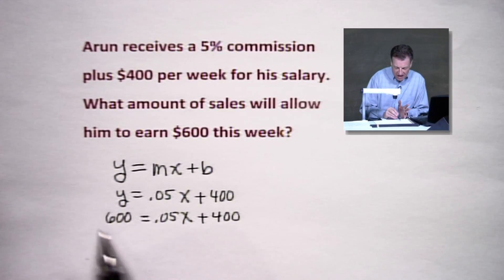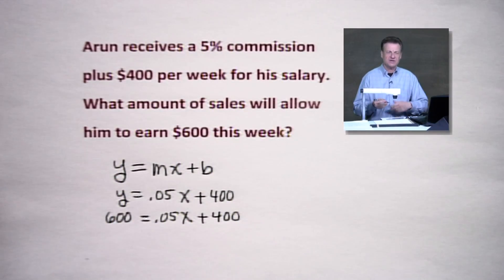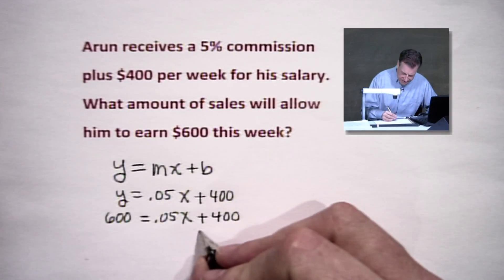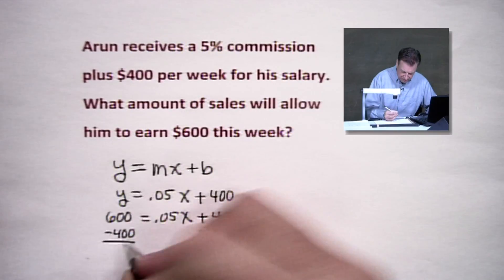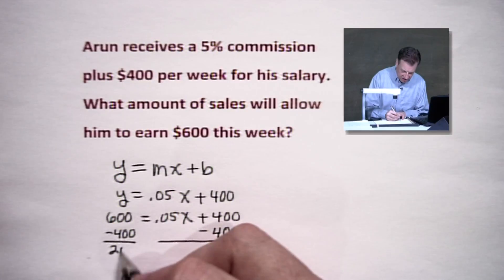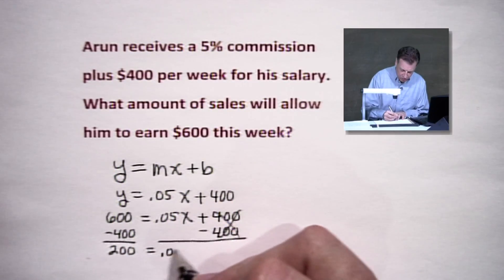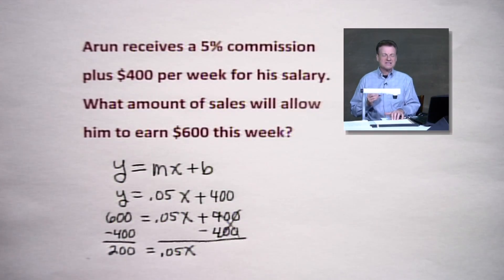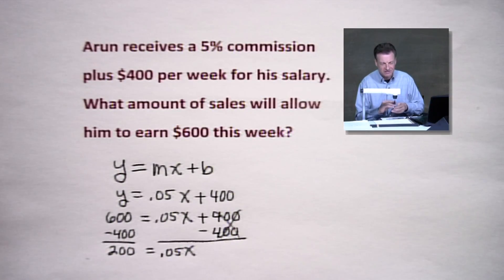You've got the dependent variable — the 600 — given to you. You're working backwards on this one. Let's solve this equation. We're going to subtract 400 from both sides. And look at what's going on here: I've got 200 hanging on the left. On the right, the 400 is gone, and I've got a decimal. We're going to take 200 and divide by five-hundredths.